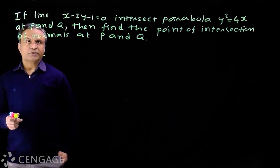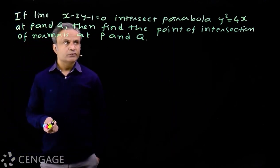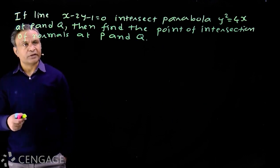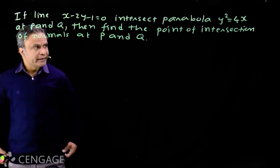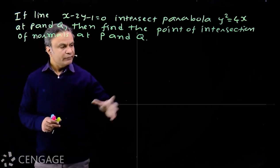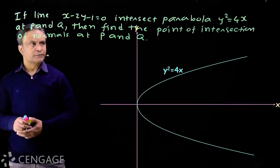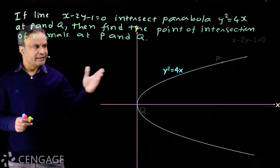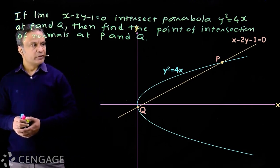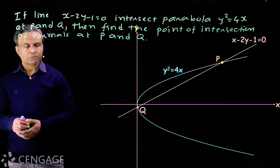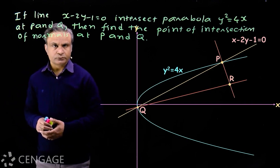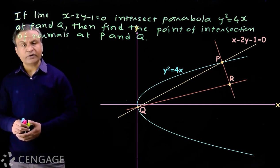If the line x − 2y − 1 = 0 intersects the parabola y² = 4x at points P and Q, then find the point of intersection of normals at P and Q. We have the graph of parabola y² = 4x, and the line meets it at points P and Q. We draw normals at P and Q which intersect at point R, and we have to find the coordinates of R.